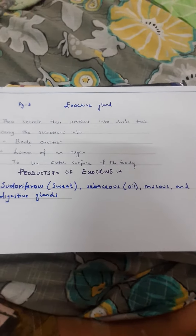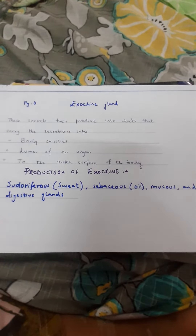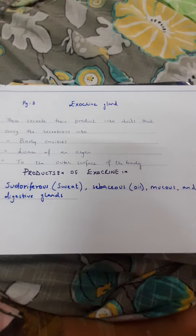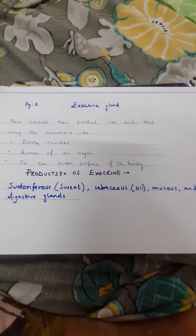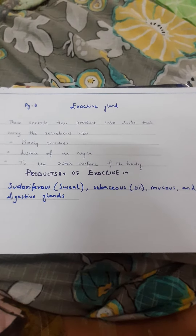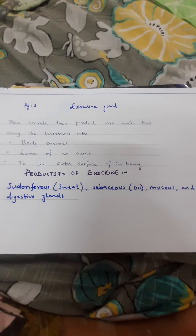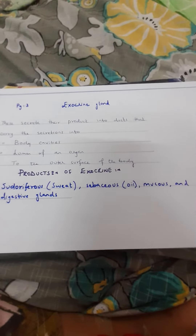In exocrine glands, the secretions do not pour directly into the blood, but pass through ducts. These secretions include sweat glands, sebaceous glands, oils, and digestive glands.